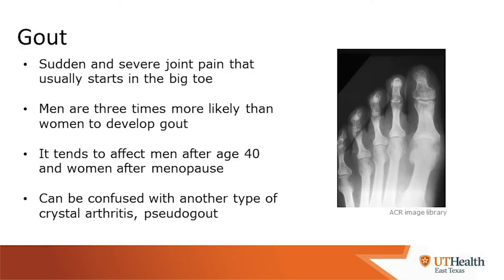Lastly, we're going to talk about gout. This is a sudden and severe joint pain that typically starts in the big toe. Men are more likely to develop gout than females — it affects men after the age of 40 and females after menopause. It can commonly be confused with another type of crystal arthritis called pseudogout.